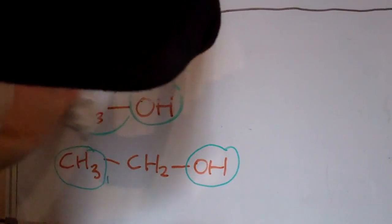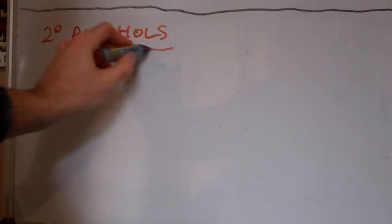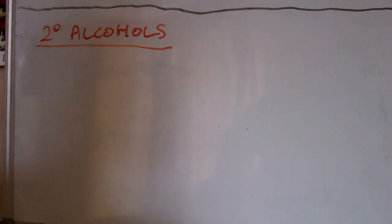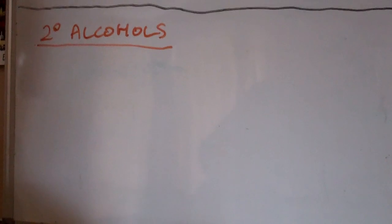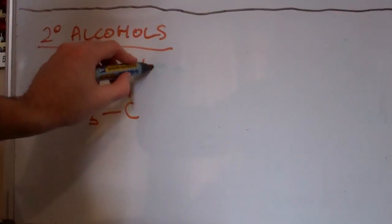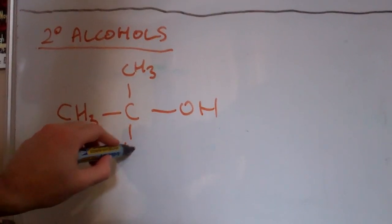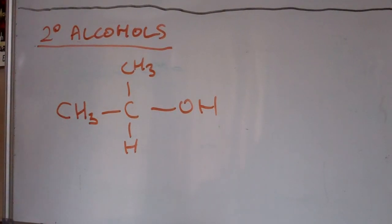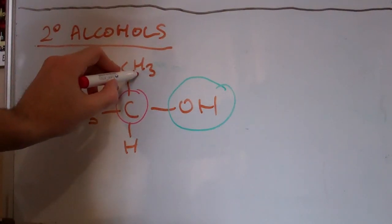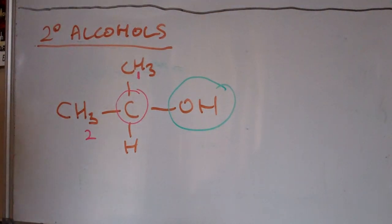The next type are called secondary alcohols. A secondary alcohol is when the hydroxyl group is attached or bonded to a carbon that is bonded to two alkyl groups — so it's got two CH groups coming off the carbon that is bonded to the hydroxyl group. Here's our hydroxyl group, and the carbon that it's bonded to is bonded to one, two methyl groups. So this is a secondary alcohol.